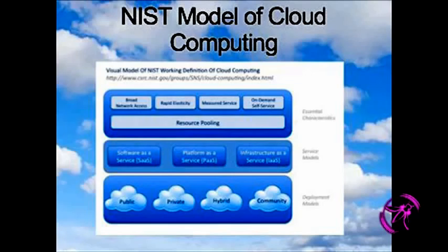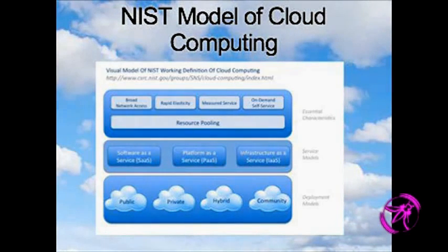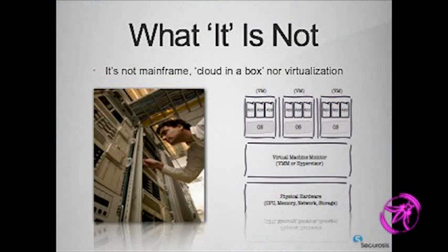What we see most often in government is the community model. So the IRS, Social Security Administration, and other government agencies will share a private cloud infrastructure. Since their regulatory requirements around data privacy are very similar, they can share that without worrying about the multi-tenancy issues that are common within public cloud infrastructure.